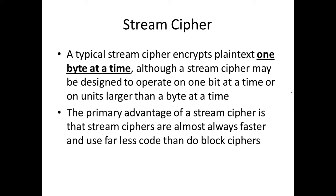Now let's look at stream cipher. A stream cipher is considered faster than block cipher. Instead of dividing the message into fixed-size blocks, you take a stream of bits and encrypt it as it arrives. The stream can be one bit or one byte (8 bits) at a time. There is no block concept — it can happen in real time.